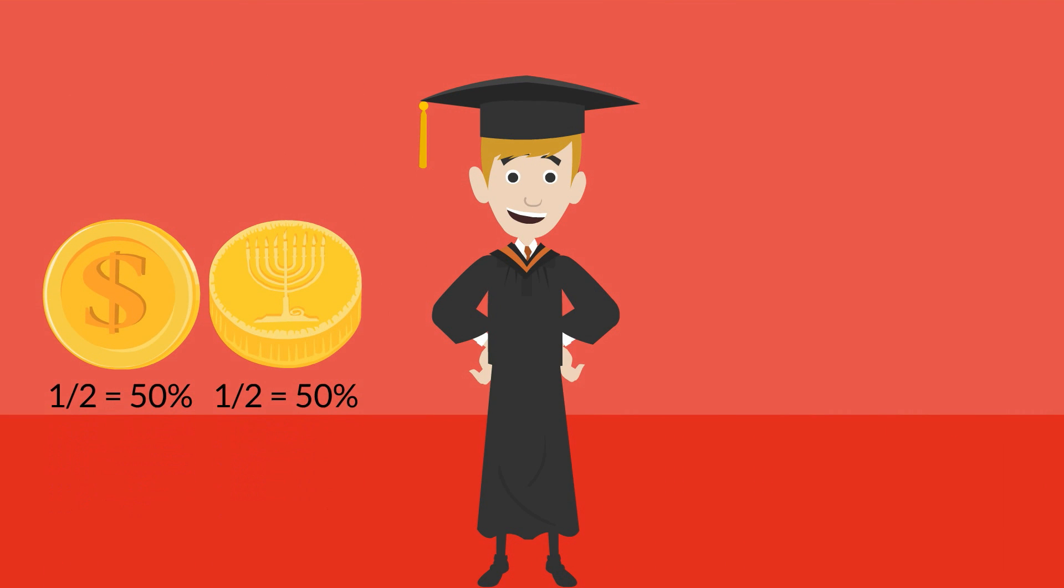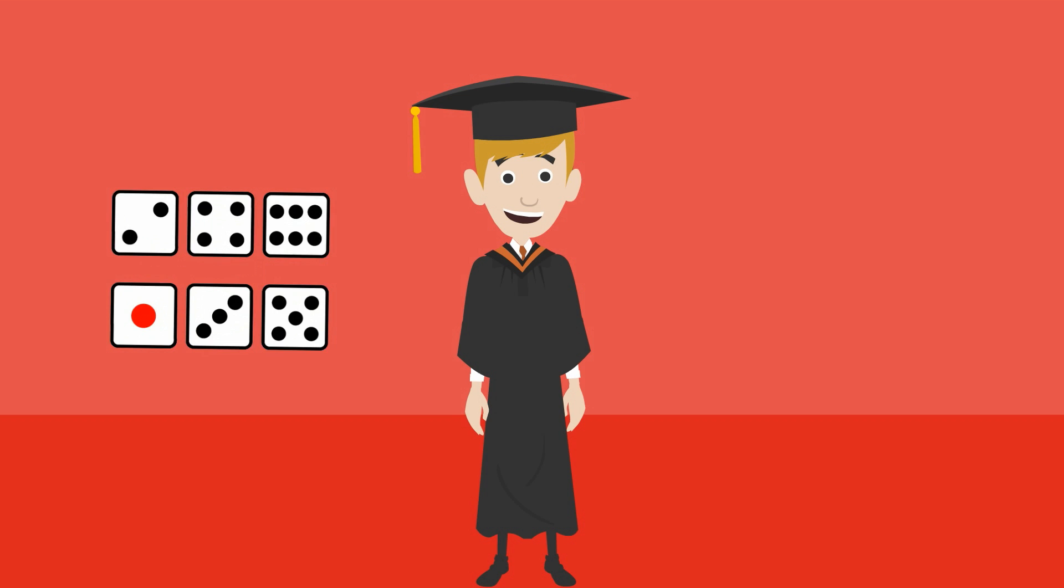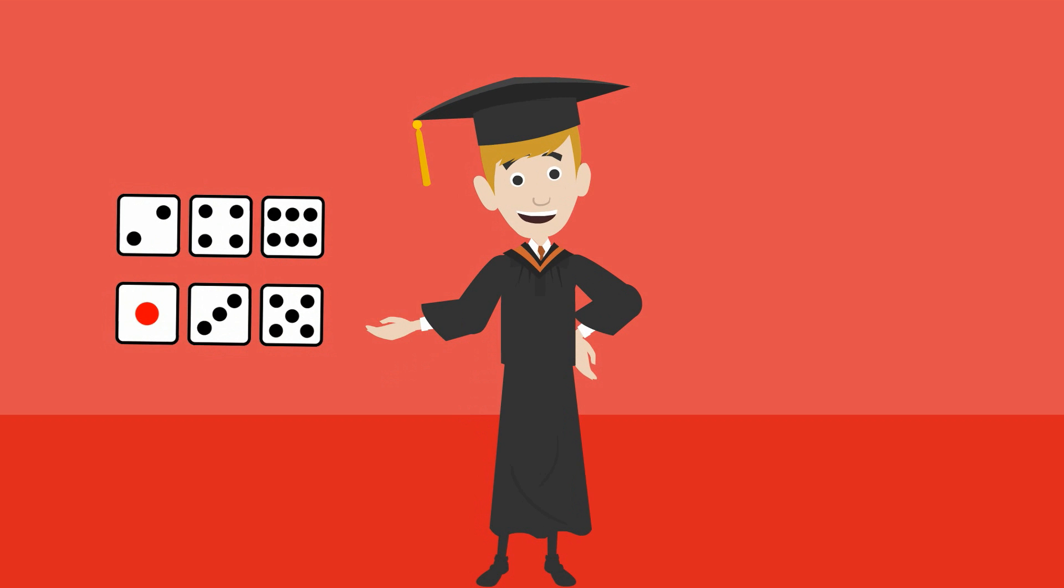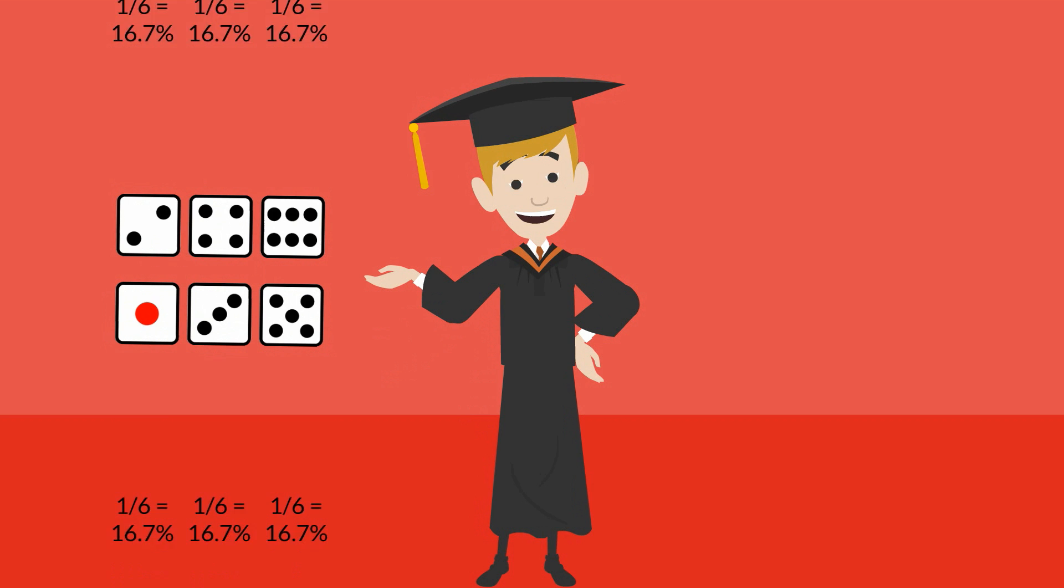and tails. The likelihood of one of them taking place is one divided by two, or 50%. Let's complicate things a bit. When throwing a dice, there are six possible outcomes: one, two, three, four, five, and six.